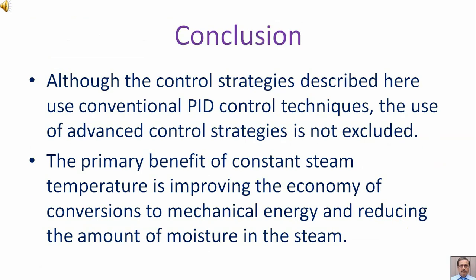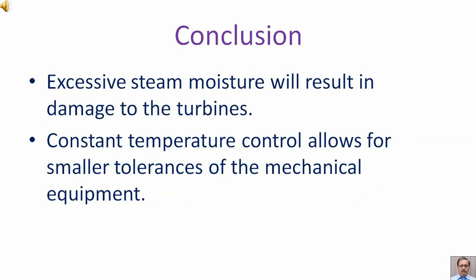Although the control strategies described here use conventional PID control techniques, the use of advanced control strategies is not excluded. The primary benefit of constant steam temperature is improving the economy of conversion to mechanical energy and reducing moisture in the steam. Excessive steam moisture will result in damage to the turbines, and constant temperature control allows for smaller tolerances of mechanical equipment.